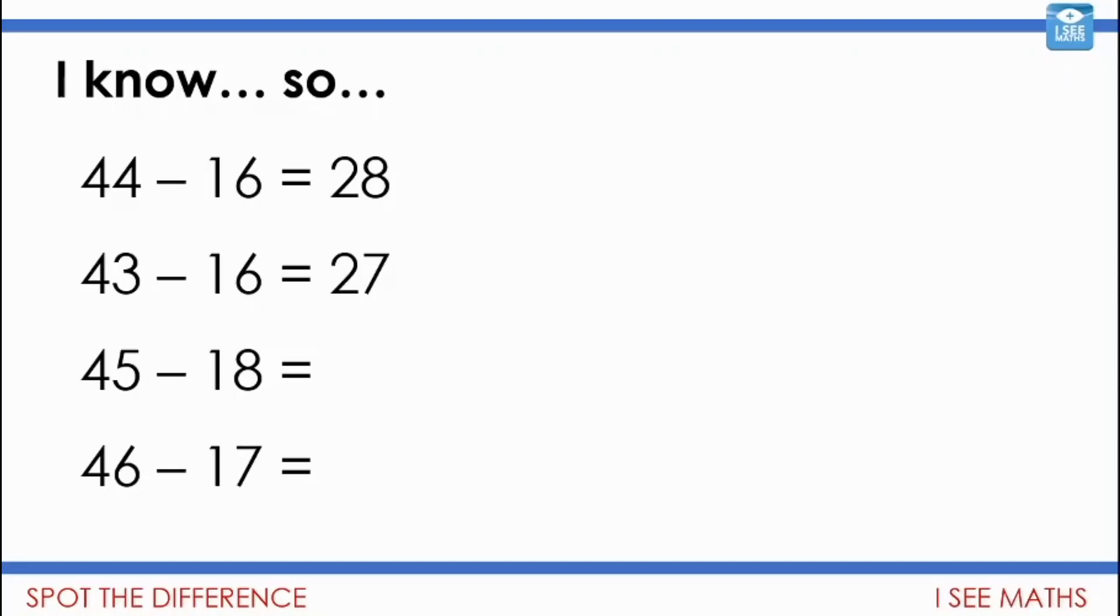What about 45 subtract 18. Now I've added 2 to 43 to make it 45. I've added 2 to 16 to make it 18. So actually the difference then will stay the same. It will still be 27. Well let's have a look at this one. 45, 46 that's one more. 18, 17 it's one less. So it's one more and I'm taking away one less. Well the answer then will be 2 more.